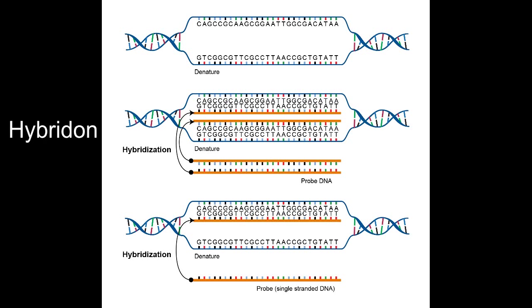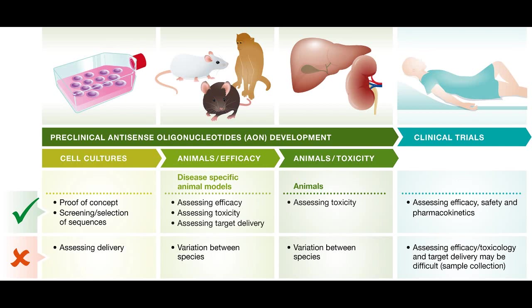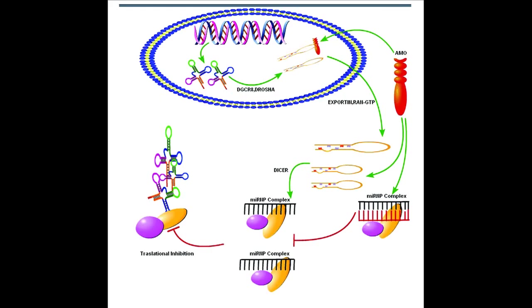The term they introduced to describe such oligonucleotides was hybridon. At the same time, other groups, notably Tennant et al. and Miller et al., were reporting similar effects for synthetic oligonucleotides in other systems.